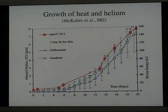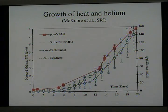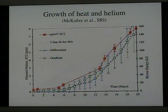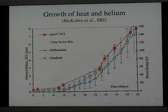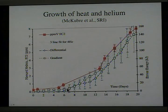Here's another example of the relationship between helium production and heat production. In this case, the sample being studied is an ordinary chemical catalyst, which consists of finely divided palladium deposited on charcoal. This was heated in deuterium gas for a period of time, and after a while the helium content of the gas began to rise, and the amount of energy generated by this process also began to increase.